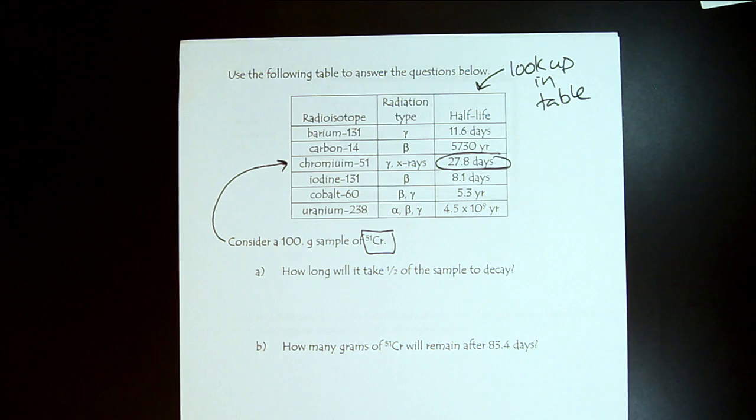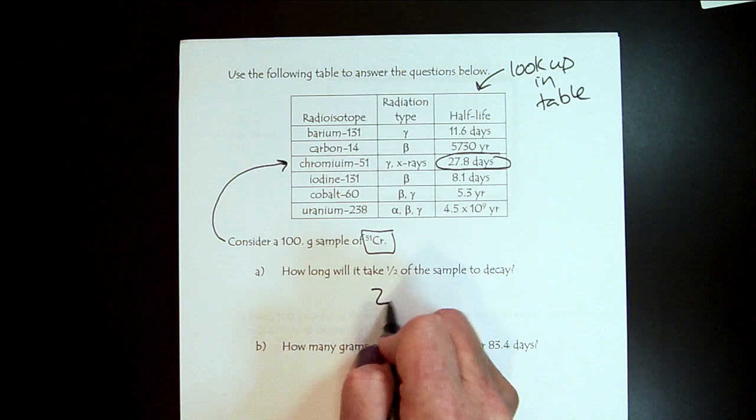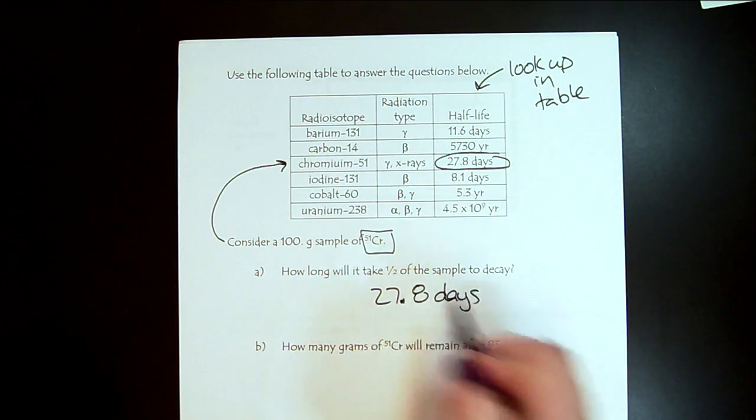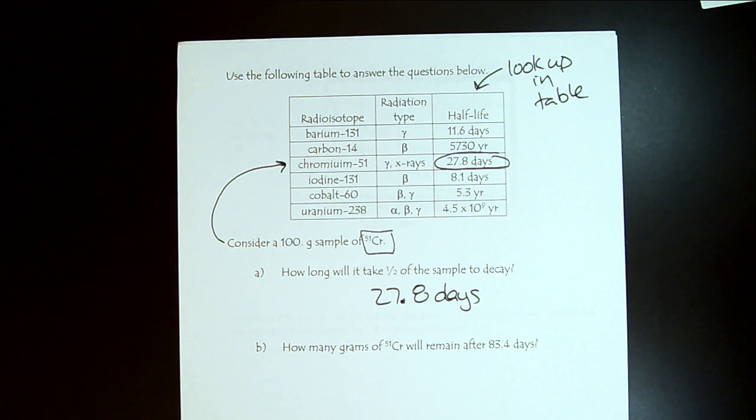So let's make sure everybody understands half-life. How long will it take for half the sample to decay? Go ahead and write your answer down. It's a really simple one. It's going to take 27.8 days, because that's what a half-life means.